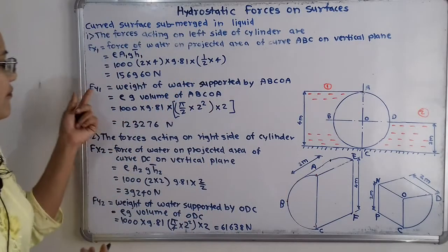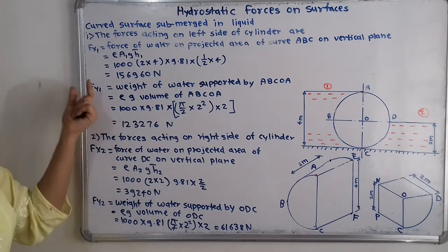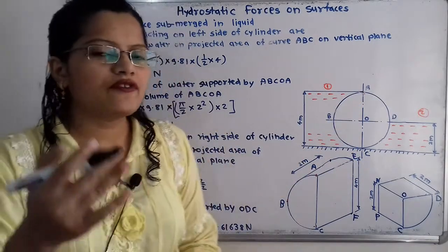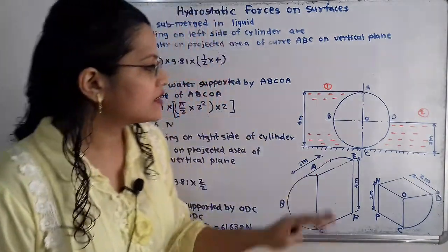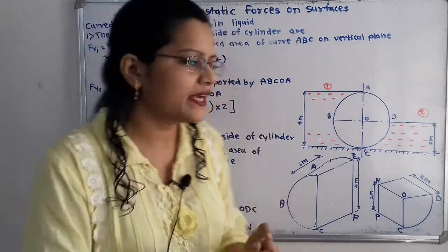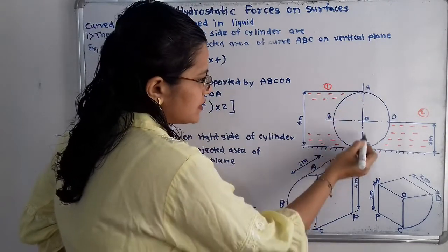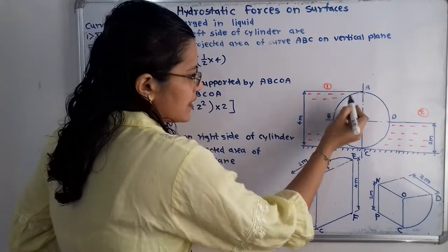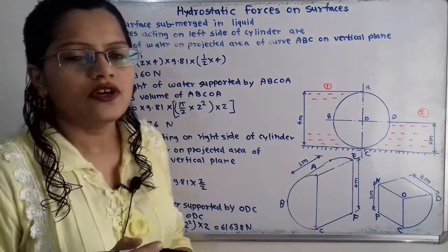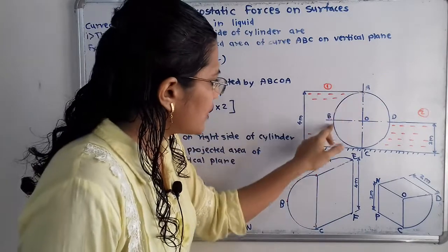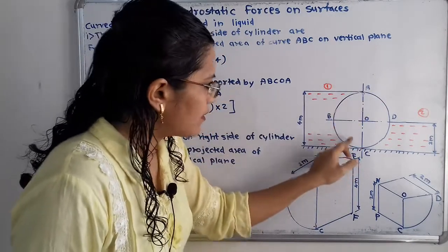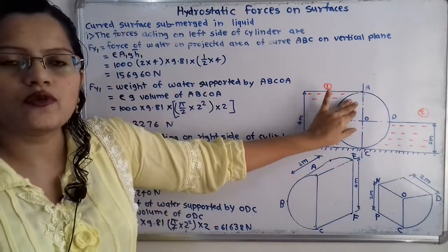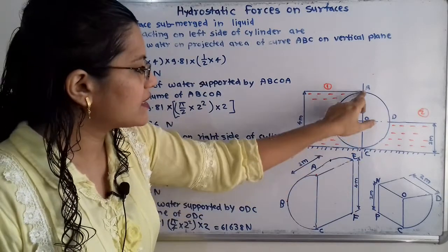Now we move to calculating FY1, which is the weight of water supported by the curve ABCOA. This is an imaginary part because in actuality there is no water inside it, but we measure the weight of water supported by this area. The part ABC is in contact with water, and we enclose it by joining C to A, giving the enclosed area ABCOA.